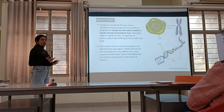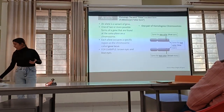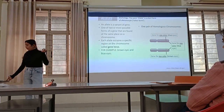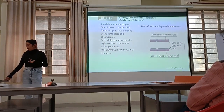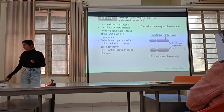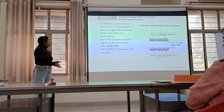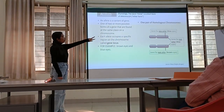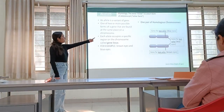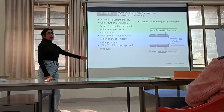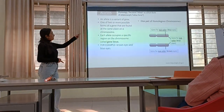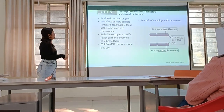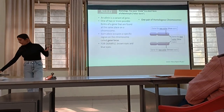Every person has two copies of each gene, which are known as alleles. The word allele is a short form of allelomorph, meaning other forms. Alleles are variant forms of genes. One or two or more possible forms of a gene that are found at the same place on a chromosome — alleles occupy the same specific region of the chromosome, known as the locus. For example, one chromosome codes for blue eye color and another codes for brown eye color. This is known as alleles.